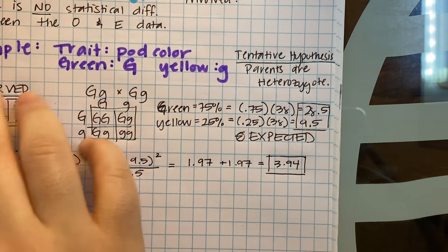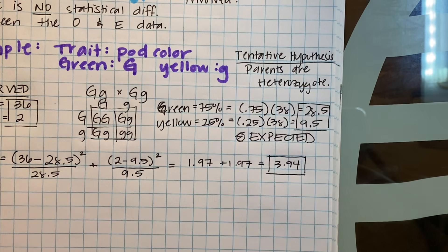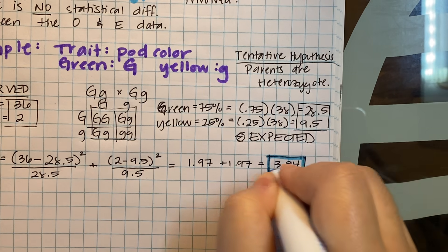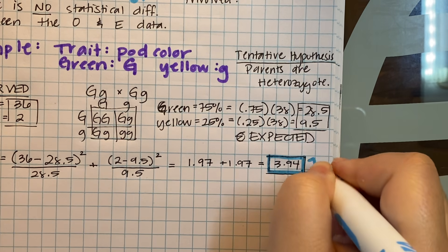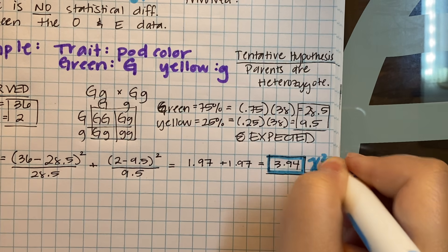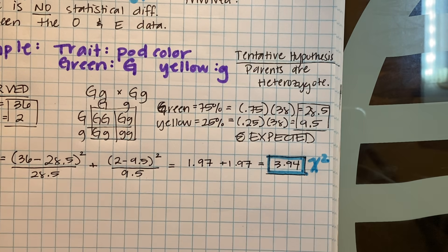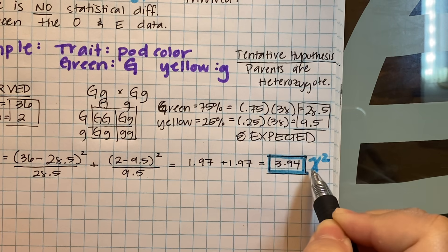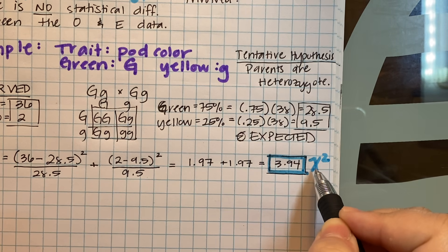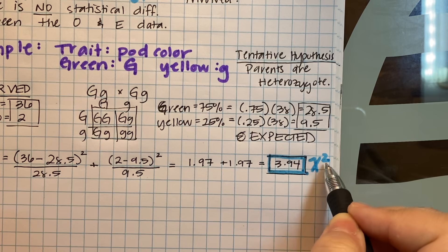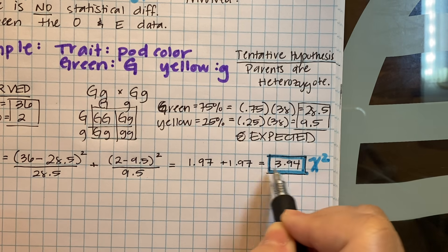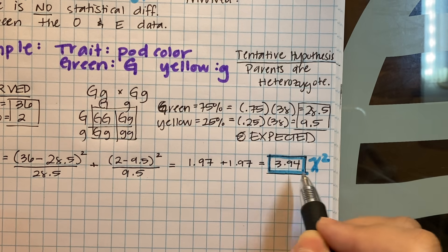Put a box around that so you don't lose it — this is our chi-square value of 3.94. One mistake students make is they take the square root and solve for chi. We don't want that — we're solving for chi-square, so keep it as chi-square.